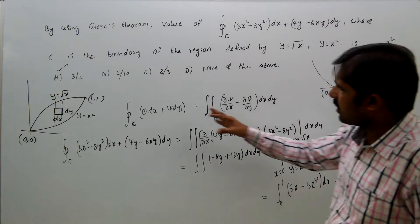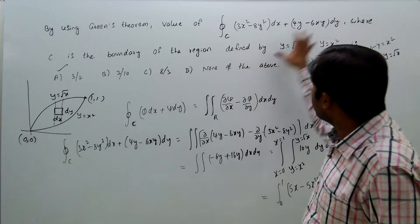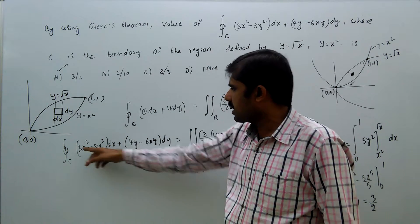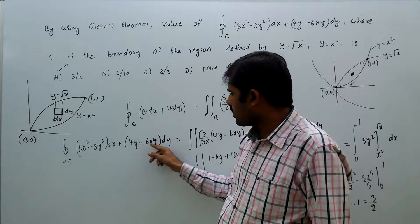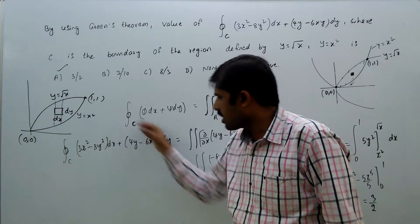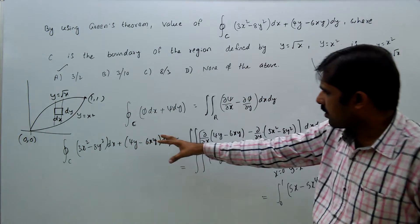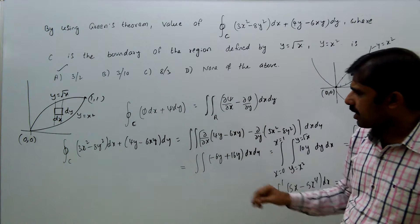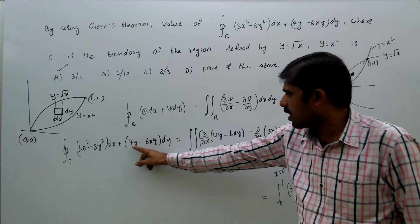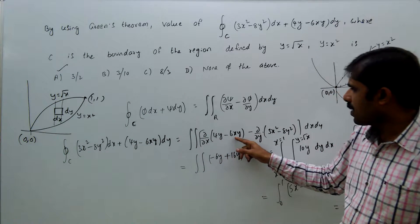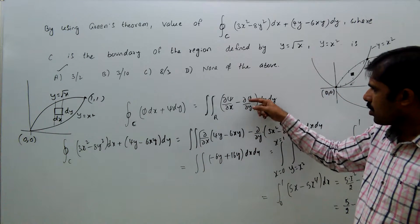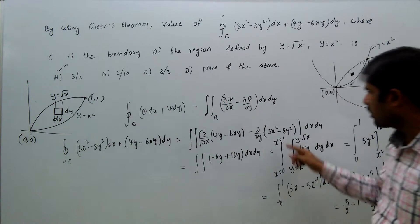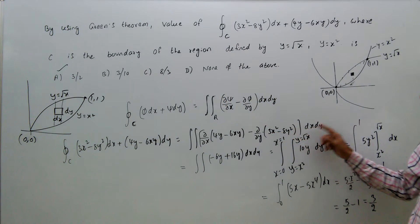Applying Green's theorem: P dx + Q dy corresponds to the given integral (3x² - 8y²)dx + (4y - 6xy)dy. So we set up the double integral of ∂Q/∂x minus ∂P/∂y, where Q is (4y - 6xy) and P is (3x² - 8y²), giving the double integral of [∂(4y - 6xy)/∂x minus ∂(3x² - 8y²)/∂y] dx dy.